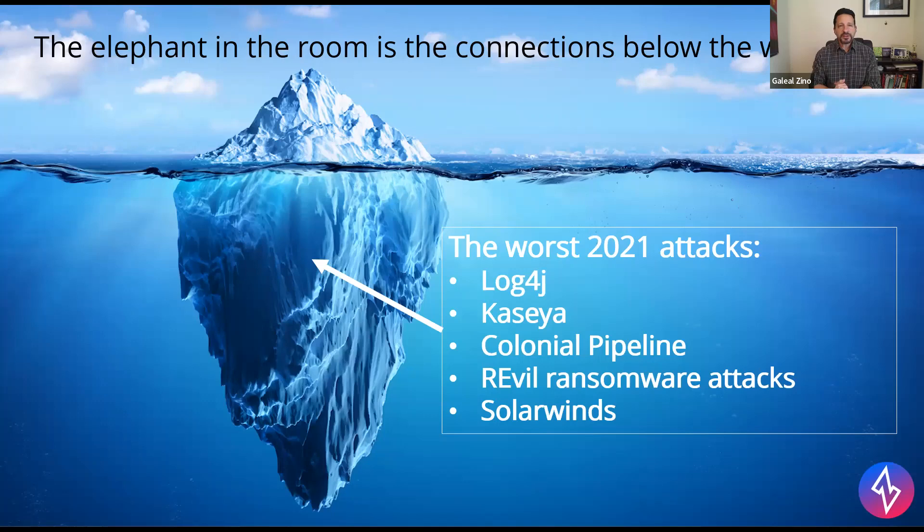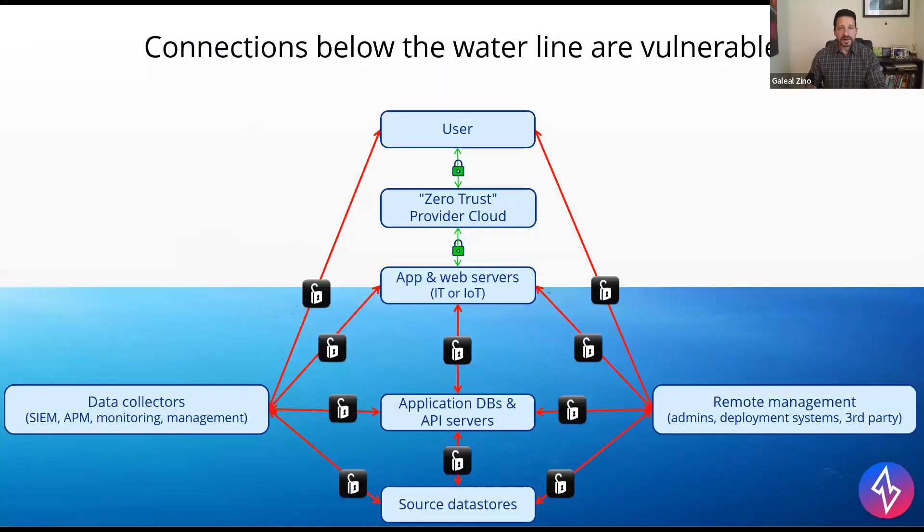Well, the elephant in the room, so to speak, is the connections below the waterline. Most of the zero trust is focused on user to application, like up here, the top of this iceberg. In reality, the worst of these 2021 attacks, they attacked under the water, so to speak. They attacked all of the other connections that maybe we don't think about as much.